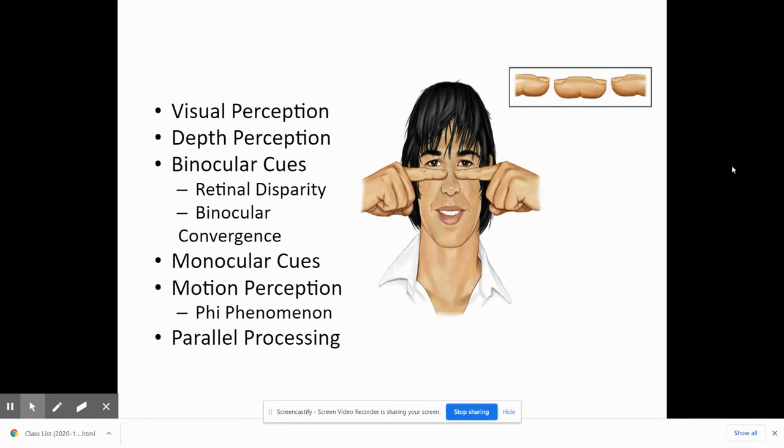One of these binocular cues is retinal disparity, which is the idea that each eye sees independently from the other. And if you take a look at some object far away and kind of close one eye and then close the other eye, kind of like a camera one, camera two thing, you'll see the object move. But what your brain is doing is making those images come together. And when they come together, this allows us to perceive this third dimension in terms of depth, especially at closer distances.